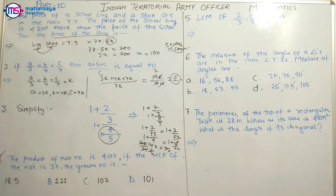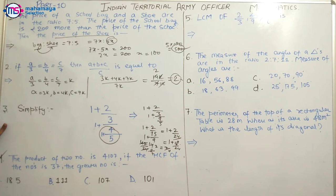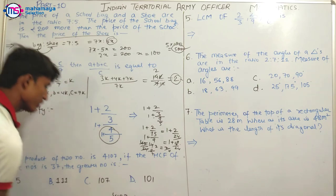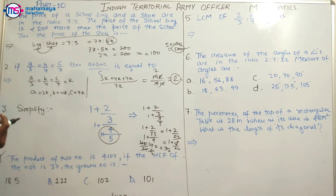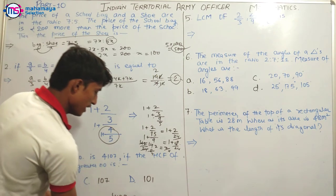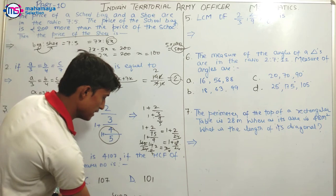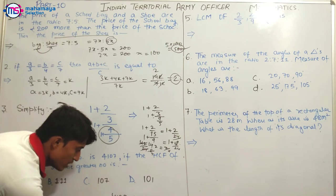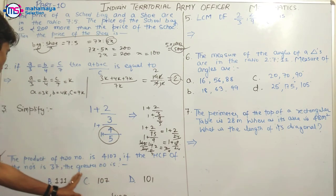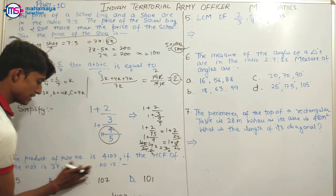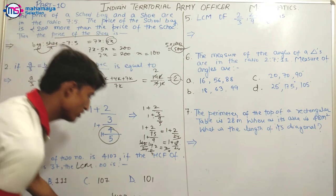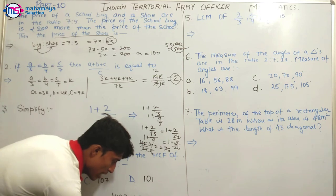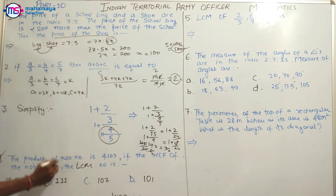The next question: the product of two numbers is 4107. The HCF of the numbers is 37. You can take out the HCF from the product: 4107 divided by 37. The resulting number is 111. So D is the right answer.